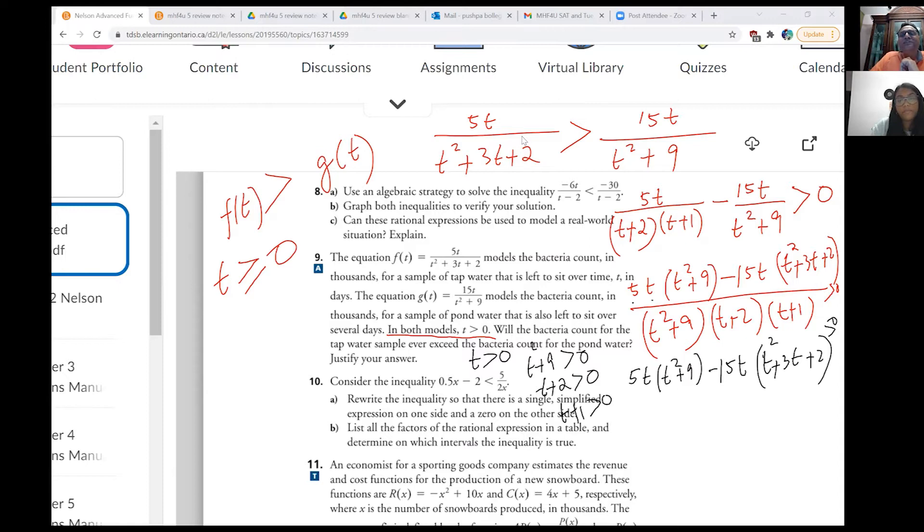Yeah. So what we get here is that we get 5t times t square plus 9 minus 15t times t square plus 3t plus 2, right? We want to show that this is greater than 0. Is that okay? Now, since t is greater than 0, see, the only thing in inequalities is that if you divide by a negative number, then inequality sign changes. Correct? Because t is positive, we can divide by it. Sign will not change. So we can divide by 5t. You can divide all these terms by 5t, right?